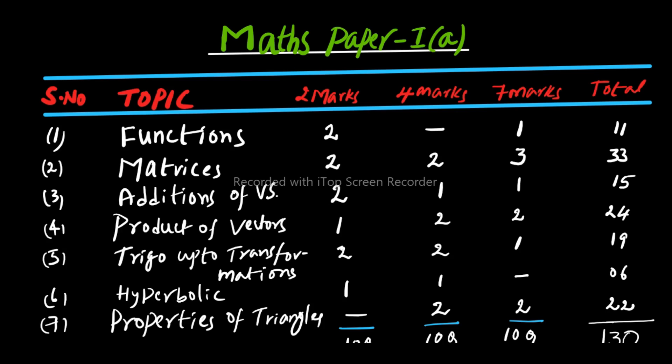Next topic is Additions of Vectors. From Additions of Vectors: 2 two-mark questions, 1 four-mark question, and 1 seven-mark question will come, totalling 15 marks weightage. Then Product of Vectors: 1 two-mark question, 2 four-mark questions, and 2 seven-mark questions, totalling 24 marks weightage. In this tabular form, the serial number, topic name, 2 marks, 4 marks, 7 marks, and total marks in each topic are all clearly given.